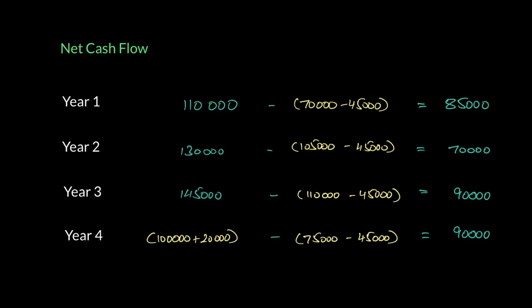Now for year 4, the revenue receipt is still $100,000, but we'll add the scrap because the scrap falls under money coming in. That's a cash inflow. So your inflows will now be $120,000. That's one change if we compare it to the profit calculation. And for outflow again, $75,000 minus $45,000, that gives you net cash flow to be $90,000 in year 4.